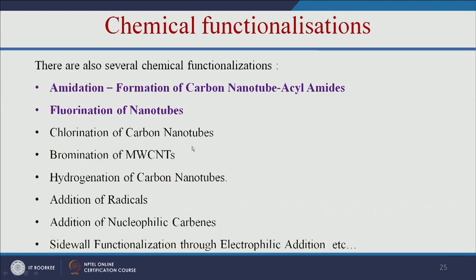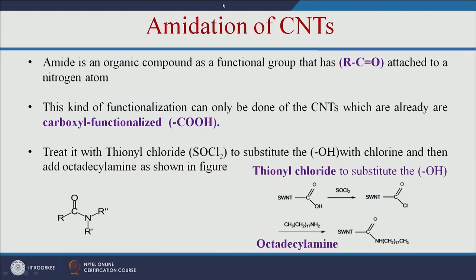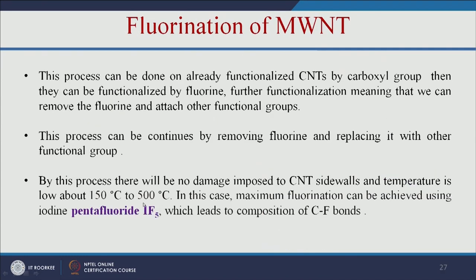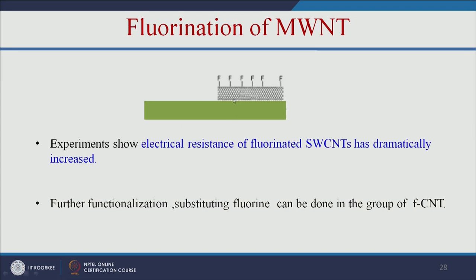There are other types of chemical functionalization; here we discuss amidation and fluorination. Amidation means addition of an amide group, but we cannot add the amide group directly — first we have to functionalize the carbon nanotubes with COOH, then we can add the amide group. Similarly, we can add a fluorine group using pentafluoride IF5. Adding the fluorine group increases electrical resistance, and we can substitute the fluorine with other chemical groups for various applications.